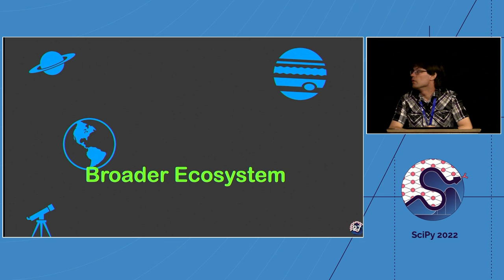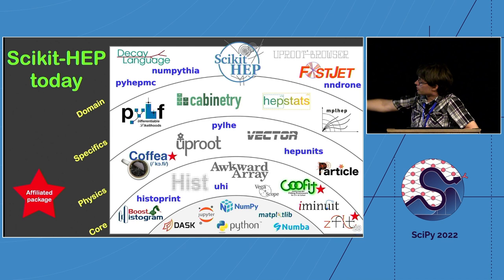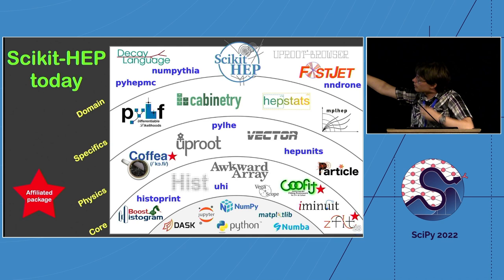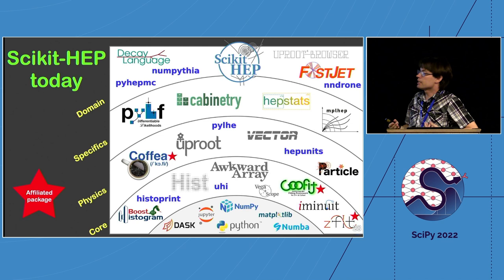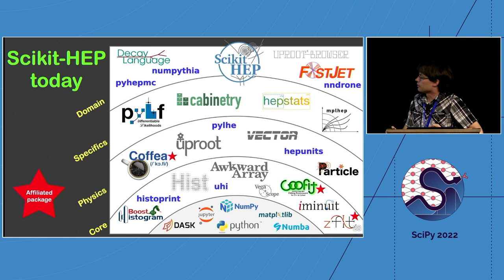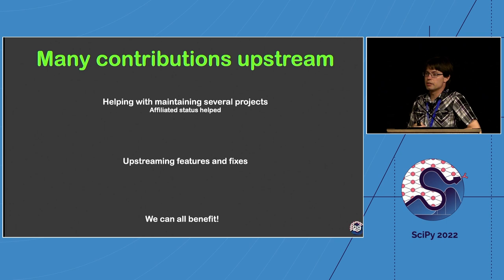Looking at the broader ecosystem today: scikit-hep occupies mostly the outer rings of a layered diagram, building on top of matplotlib, Numba, NumPy and other tools. The core tools are also useful outside of HEP. More domain-specific packages are further out. Scikit-hep also has an affiliated package concept — packages like GooFit, Coffea, and zfit that work with us and use our tools but are separate from the organization. We've also tried to upstream as many contributions as possible, including shared maintainership in packages and contributions to Dask, Matplotlib, and others.